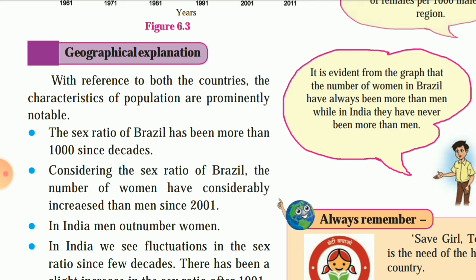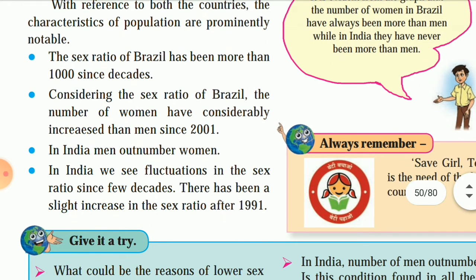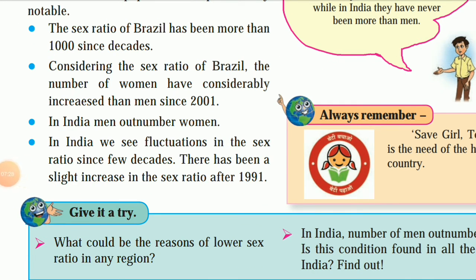Third, in India men outnumber women — males are more and females are always less, right from 1961 where it was 940, going slightly above 940 in 2011. Fourth, in India we see fluctuations in the sex ratio over the decades — it gets low, then slightly increases, then goes down again. Fifth, there has been a slight increase in the sex ratio after 1991.